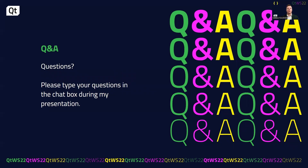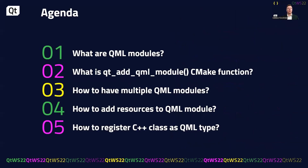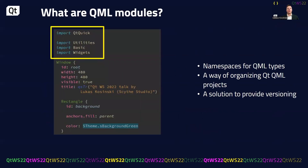This talk is pre-recorded, so I'm with you on the chat — feel free to leave me a message there. The presentation consists of five elements. First, I will tell you what QML modules are and when to use them. Then you will get a short overview of the CMake function, which is the main topic of this talk. Then I will show you how to have multiple QML modules, how to add resources to your module, and at the end, how to register your custom C++ class as a QML type.